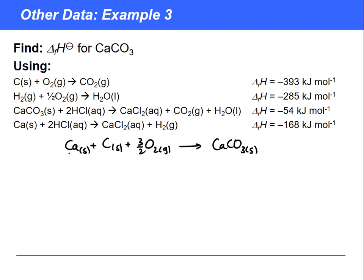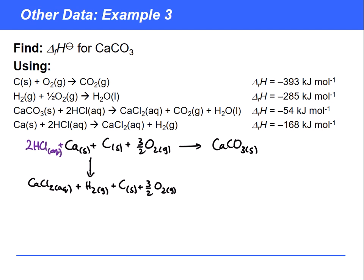We play the same game - for the left-hand side we look for reactions any of these substances are involved in. We find that calcium is involved in a reaction with hydrochloric acid. So we put 2 HCl in here, react with the calcium, and that makes calcium chloride and hydrogen gas. The carbon and oxygen are unchanged and stay as they are. The enthalpy change for that step is -168 kJ/mol.